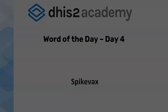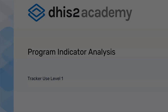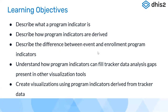Today we are going to discuss program indicators and how to use them for analysis of tracker data. This is not a session focusing on how to configure program indicators, as that will take place separately in our tracker configuration academy. Here we will discuss how to use existing program indicators that have been configured in your system for tracker data analysis. The session objectives are: we will describe what a program indicator is and how program indicators are derived.